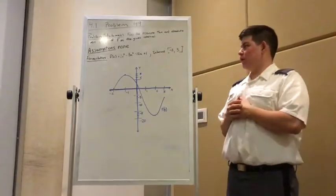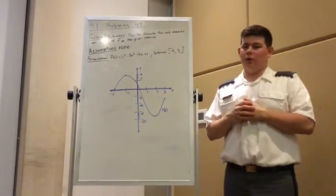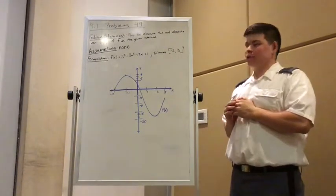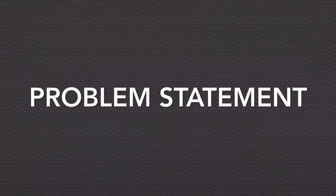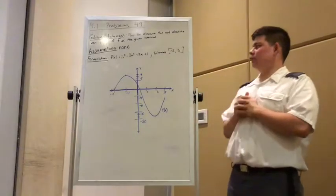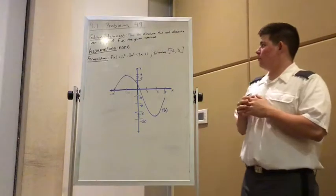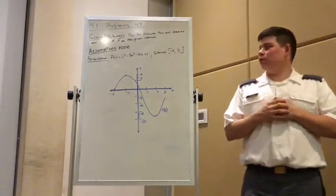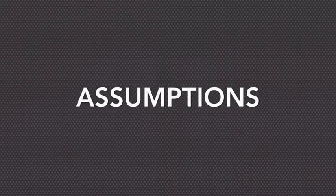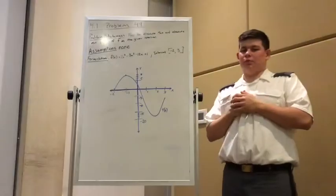Hi, I'm Kodak Bowman, and I'll be performing a quality rep on problem 49 from section 4.1. So as you can see here, the problem statement is find the absolute max and absolute min values of f on the given interval. For this problem,